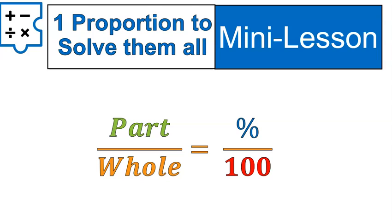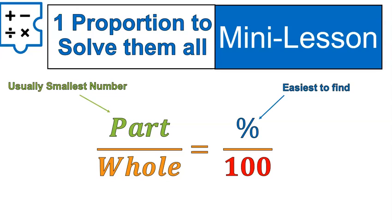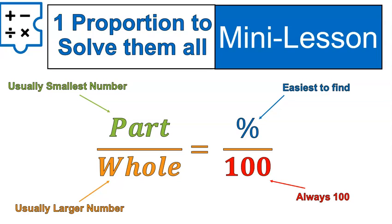We're going to use this proportion for all of our percent word problems. There might be other shorter ways in certain cases, but this is the only way to universally solve all percent word problems with just one method. The part over the whole — the part is usually the smallest number, the percent is the easiest thing to find, the whole is usually the larger number, and one hundred is always one hundred.